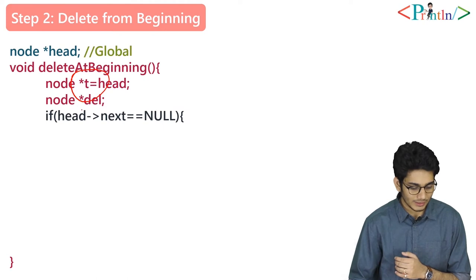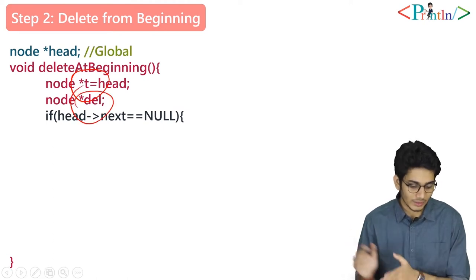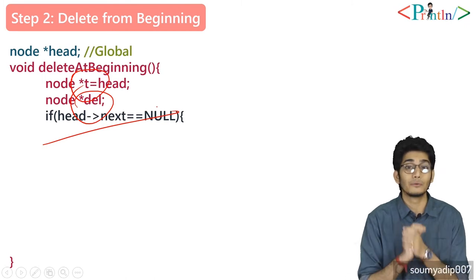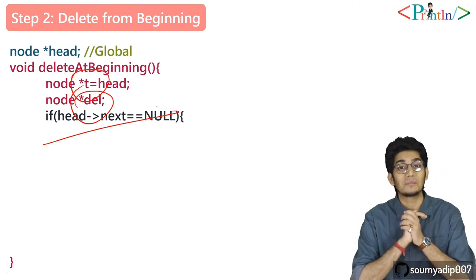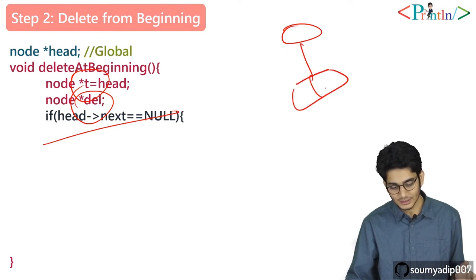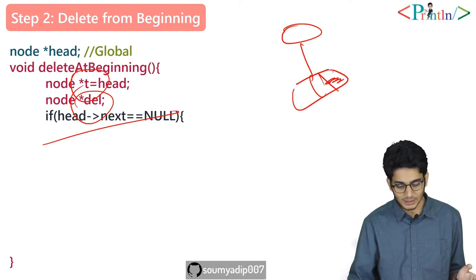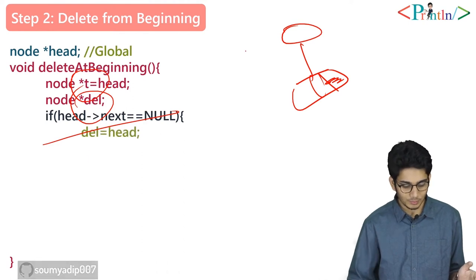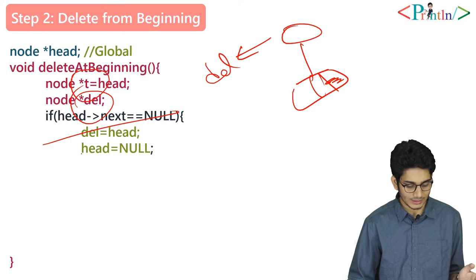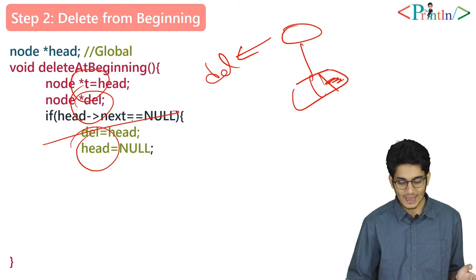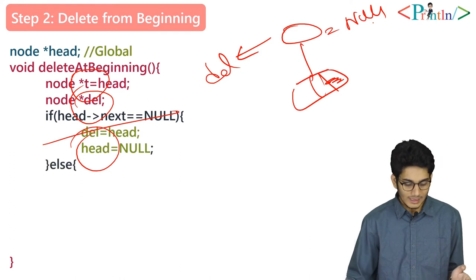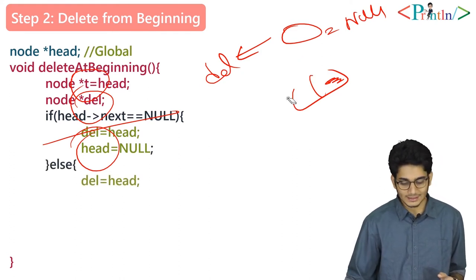Looking at the algorithm, we have a reference pointer t and a del pointer. We deallocate the memory using del. The condition checks if head next equals null — if we have only one value in the list, head next will be null, so we put head into del and make head null.